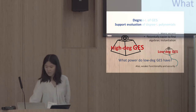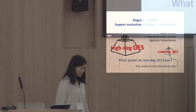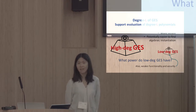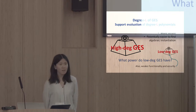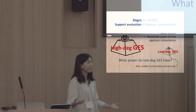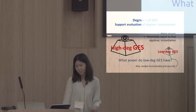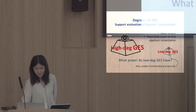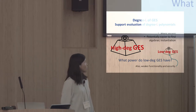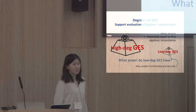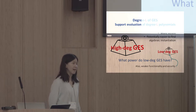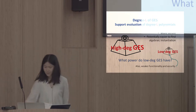With respect to algebraic instantiations that we don't have today, it is potentially easier to build low-degree graded encodings as opposed to full high-degree ones. Furthermore, it is an interesting and very basic question to understand the power of those low-degree objects. Our low-degree constructions will also have weaker functionality and security guarantees than the heavy ones.